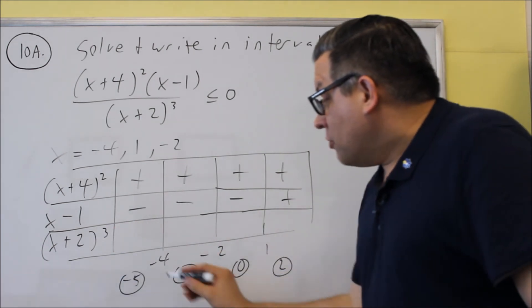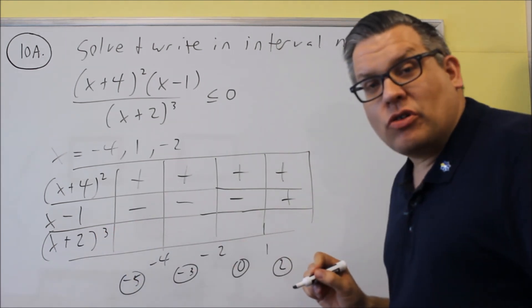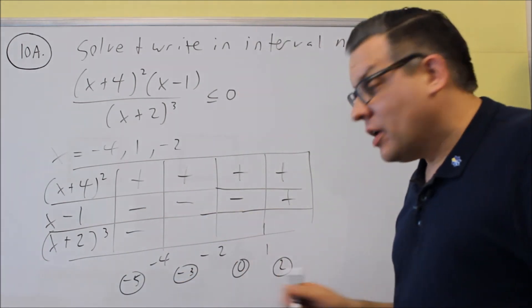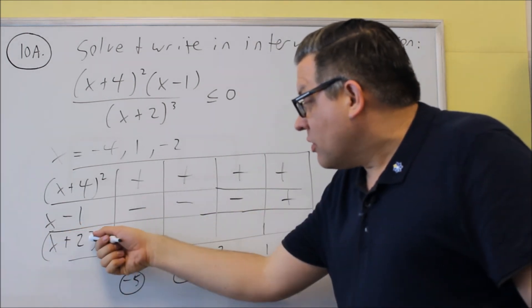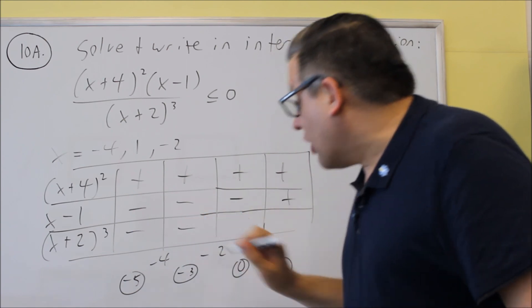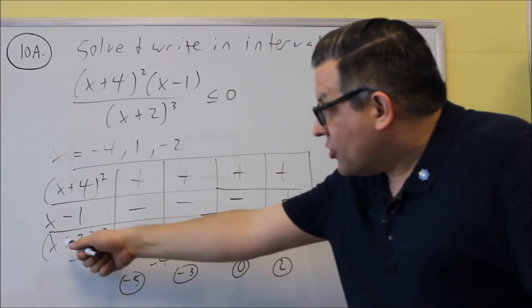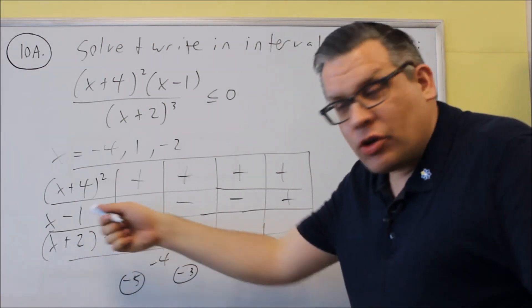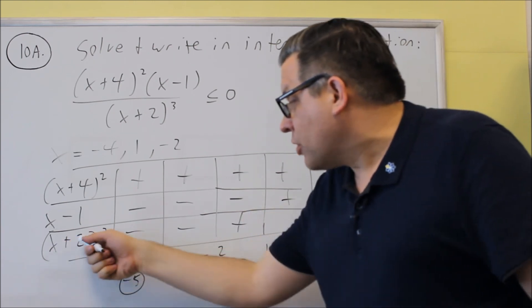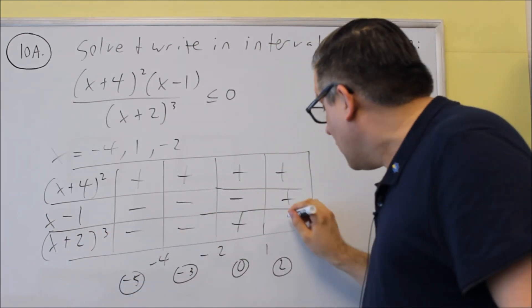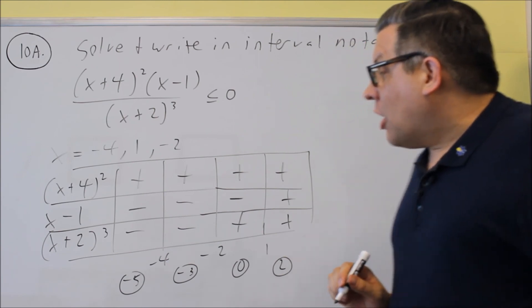Now let's do the cube. Negative 5 plus 2 is a negative number cubed, I'm still going to get a negative. Negative 3 plus 2, still negative number cubed, I'll get a negative number. 0 plus 2 is positive 2 cubed, this time I'll get a positive number, and then if I put 2 plus 2 is 4, 4 cubed, that's also positive.